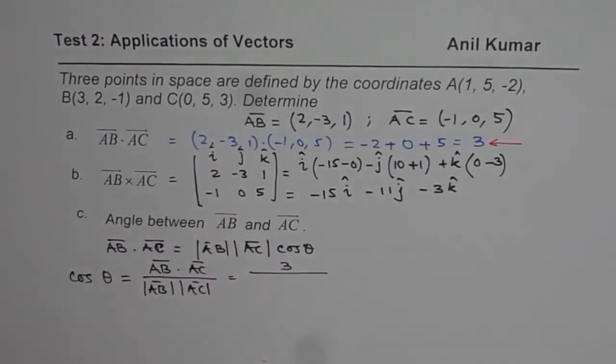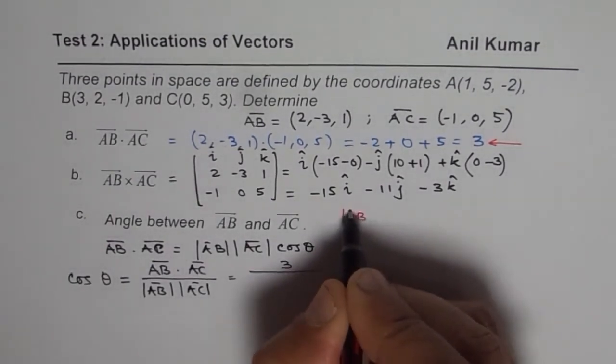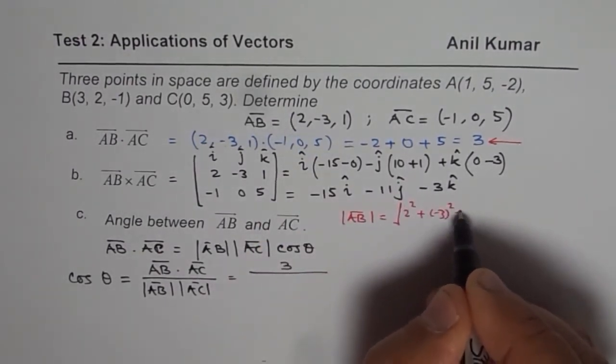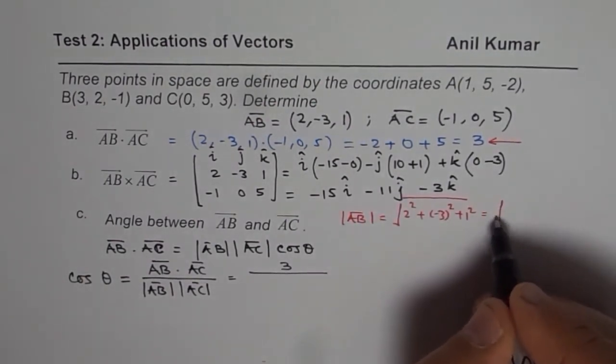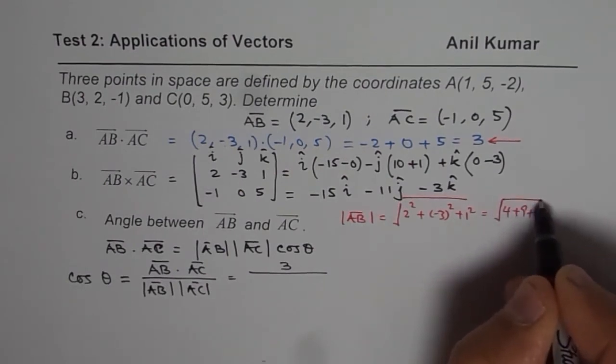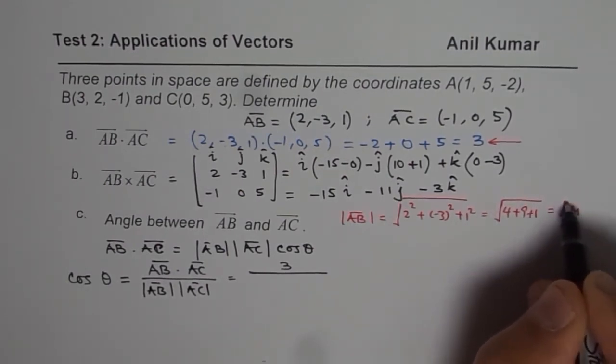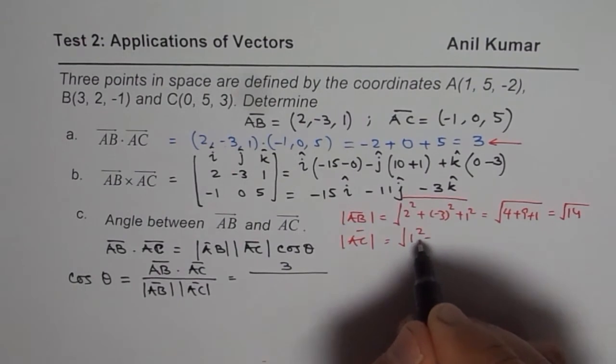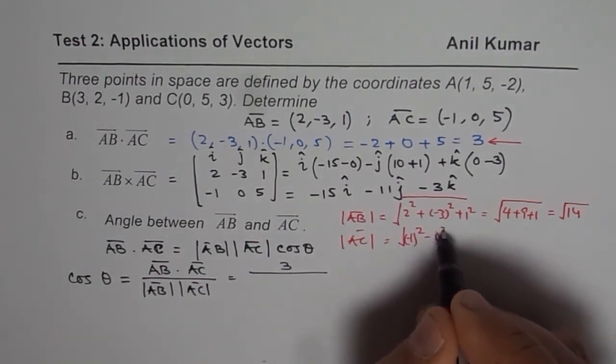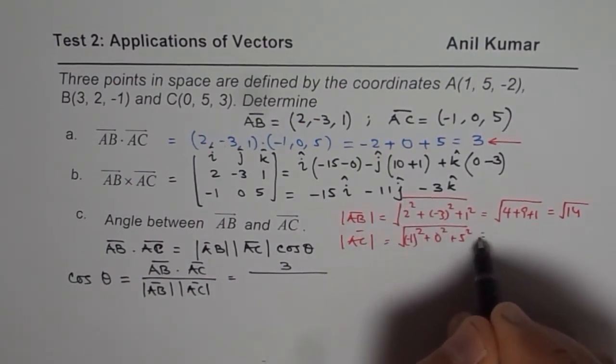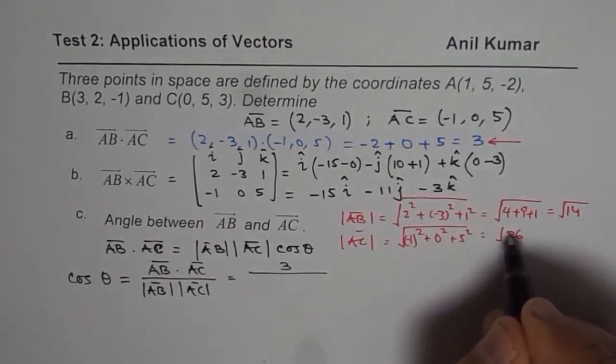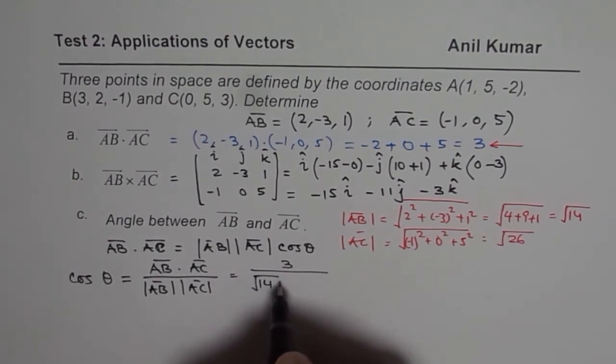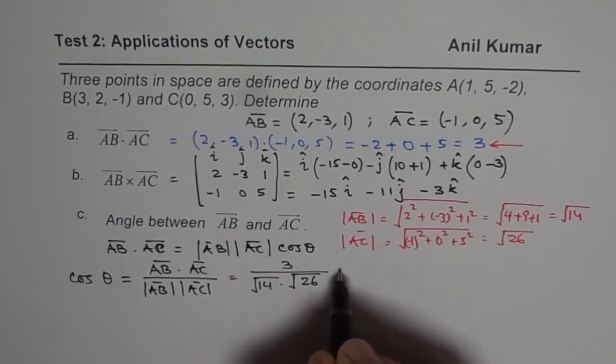So magnitude of vector AB is equals to square root of 2² plus (-3)² plus 1². That is 2² is 4 plus 9 plus 1, so it is square root of 14. Similarly, magnitude of AC will be equal to square root of 1², so -1 also you can write, 0² plus 5², which is 25 plus 1 is 26, so it is square root of 26. So you can substitute these values here, so we have square root of 14 times square root of 26.